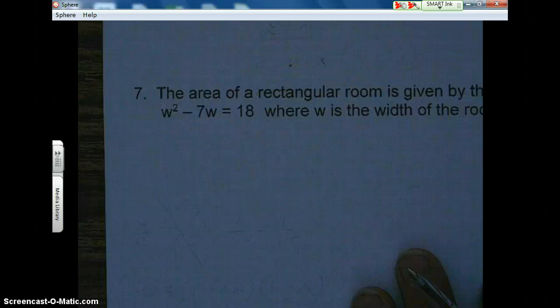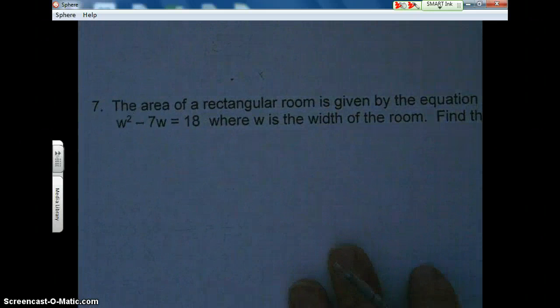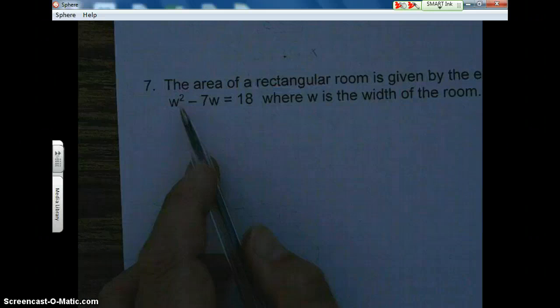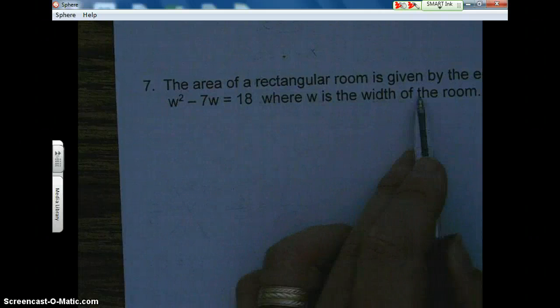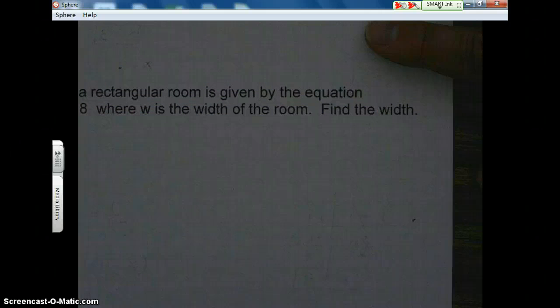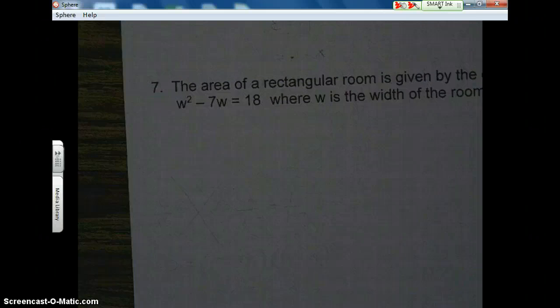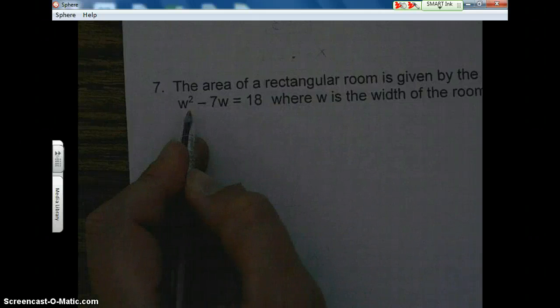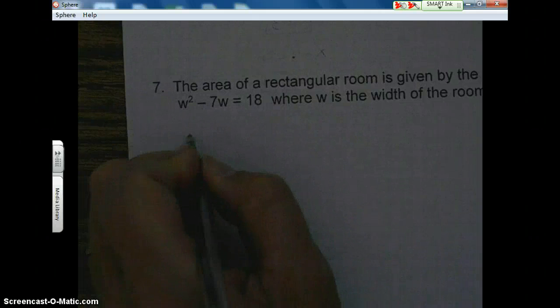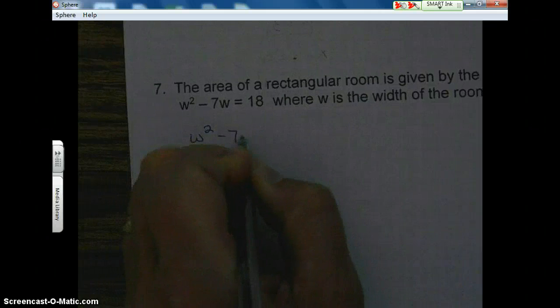Let's take a look at number seven for a moment. The area of a rectangular room is given by the equation w squared minus 7w equals 18, where w is the width of the room. Find the width. Well, basically guys, we're just solving for w. We're trying to find the solutions. So this isn't any different than what we've been doing. We're just trying to find w. So again, we start by setting the equation equal to zero. So I'm going to cancel out that 18.